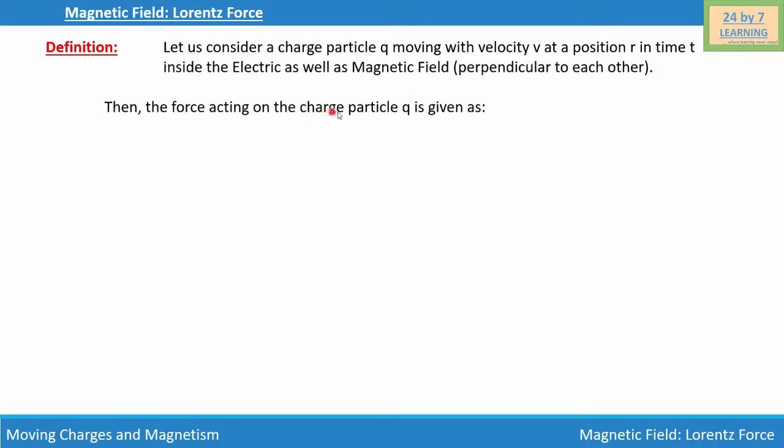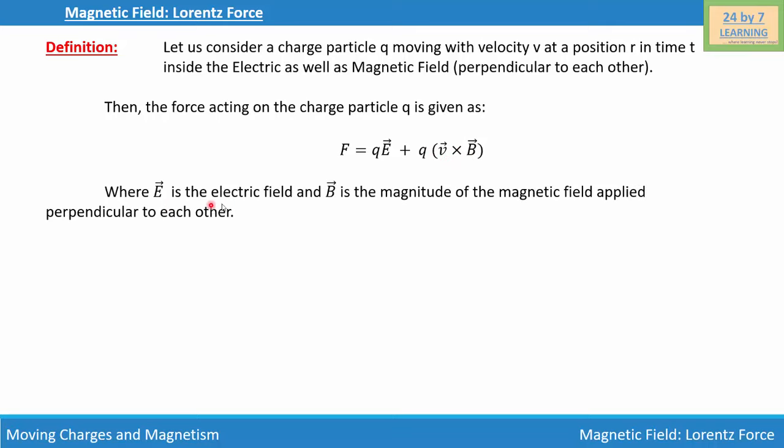Then, the force acting on the charged particle Q is given as F = QE + Q(V × B), where E is the electric field and B is the magnitude of the magnetic field applied perpendicular to each other.